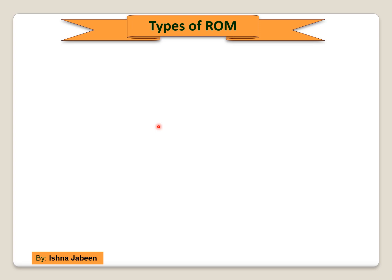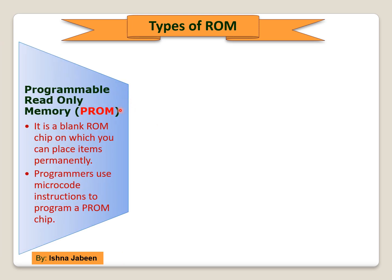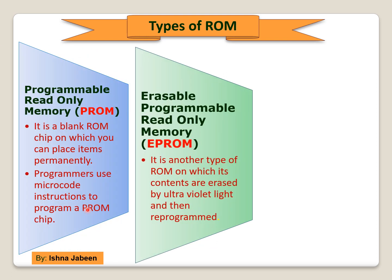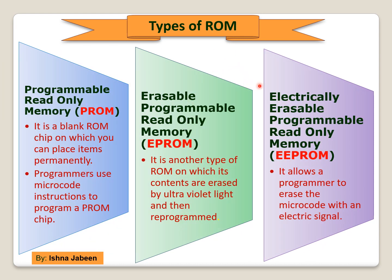Types of ROM: first is programmable read only memory (PROM). A PROM chip is a blank ROM chip on which you can place items permanently; programmers use microcode instructions to program it. Next is erasable programmable read only memory (EPROM), whose contents can be erased by ultraviolet light and then reprogrammed. Then there is electrically erasable programmable read only memory (EEPROM), which allows a programmer to erase the microcode using an electrical signal.